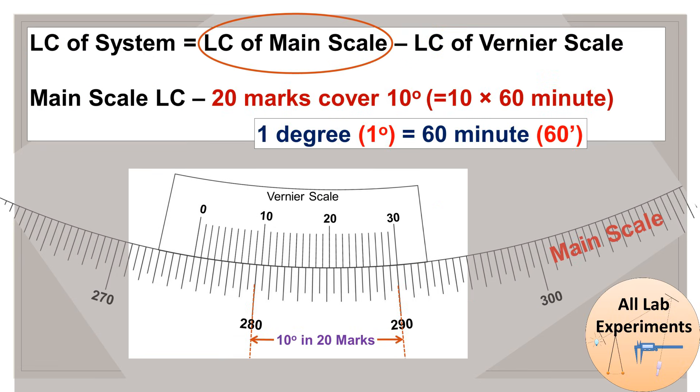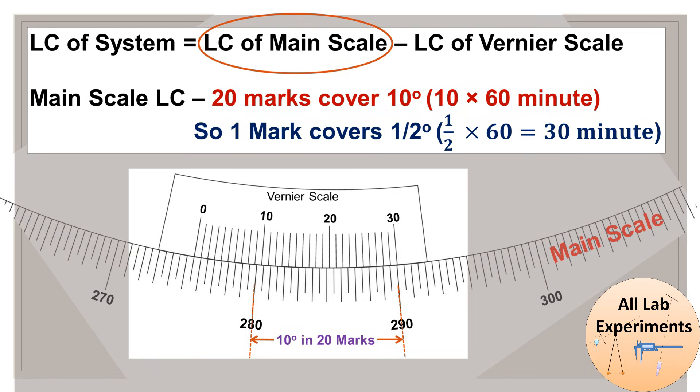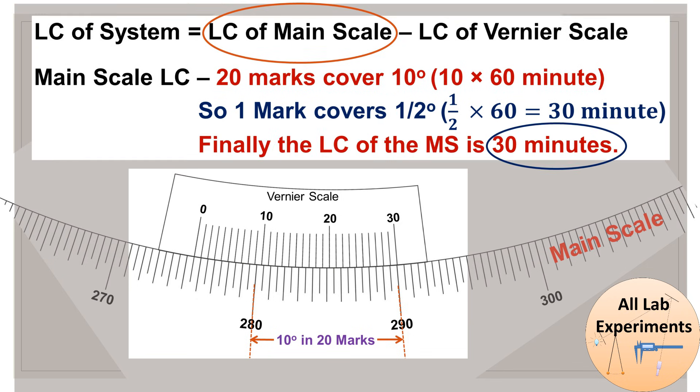As you can see on the main scale, between 280 to 290 degree angle there are 20 points in between. After 280 there is a big line representing 281, and in between them there is a smaller mark representing 280.5 degree. So we can say 20 marks cover 10 degrees or 10 times 60 minutes. By unitary method we can say 1 mark covers half degree, which is equal to 30 minutes. So finally the least count of main scale is 30 minutes.